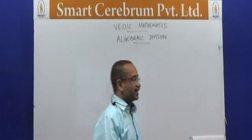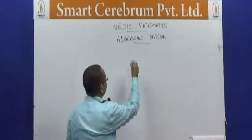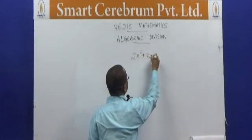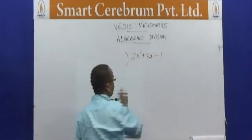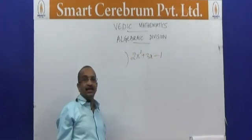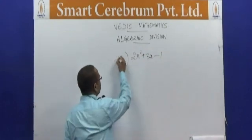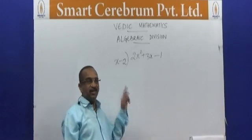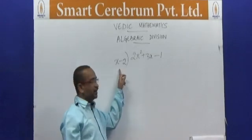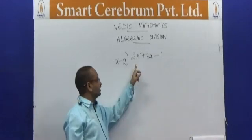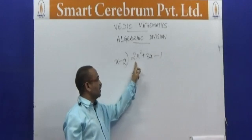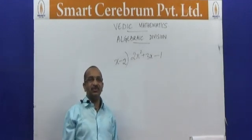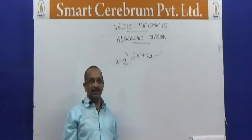For example, let us take 2x² plus 3x minus 1 and divide this by x minus 2. Here my divisor is x minus 2 and my dividend is 2x² plus 3x minus 1. Let us see what the quotient and remainder we get here.